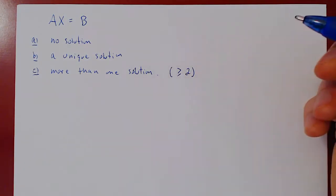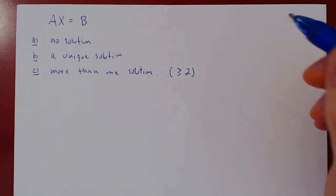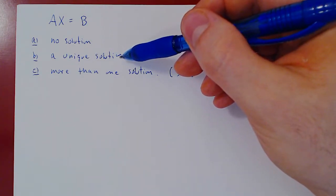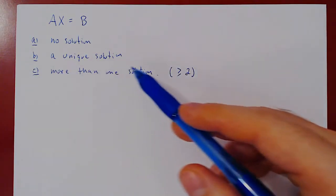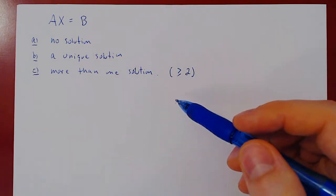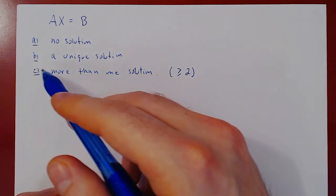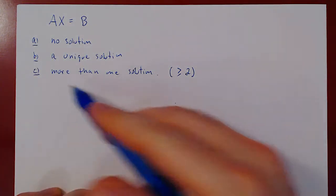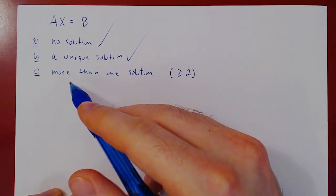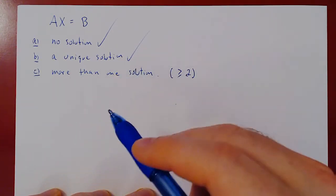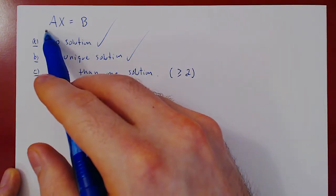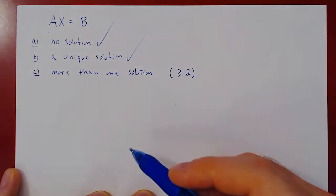Think of our statement — we're trying to prove that any linear system either has no solution, which is part of our statement, or a unique solution, also part of our statement. The only case we have to handle is: if we have more than one solution, then automatically we have an infinite number of solutions. So we can assume we are in the third case, case C. If we have no solution, we're done. A unique solution, we're done. Let's prove that if we have more than one solution, then the system automatically has an infinite number of solutions, and the proof using this form of a linear system will be really slick.